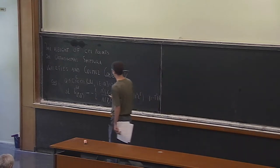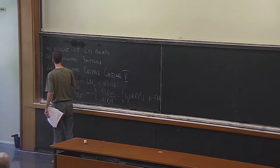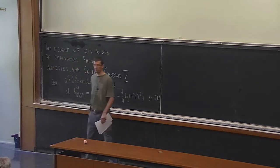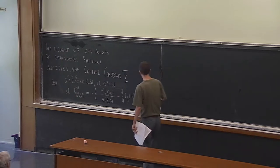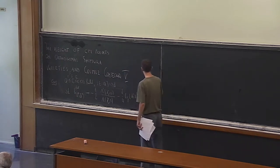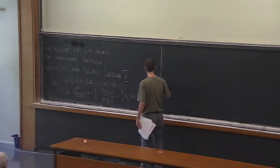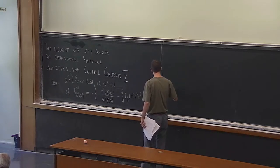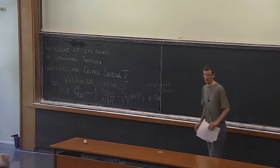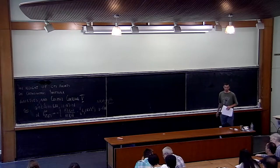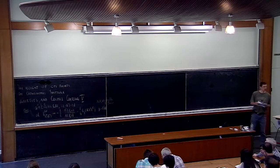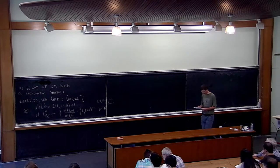Chi is the character associated to the quadratic extension given by considering the total real field F inside E. And λ_chi(s) is the complete L-function, so that it satisfies the functional equation. I've simply rewritten what we had on the blackboard on Monday, in lecture 1, in terms of the completed L-function.